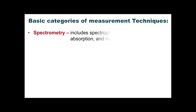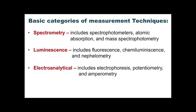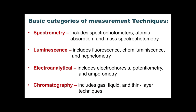These instrumentation techniques have their basic categories. First, we have spectrometry, which includes spectrophotometers, atomic absorption spectrophotometers, and mass spectrophotometry. Next, luminescence, which includes fluorescence, chemiluminescence, and nephelometry. We also have electroanalytical, which includes electrophoresis, potentiometry, and amperometry. We also have chromatography, including gas chromatography, thin layer chromatography, and liquid chromatography. Also not mentioned here is colorimetry, which measures the color of the constituent in your sample.